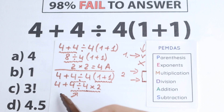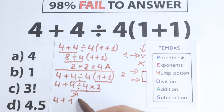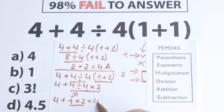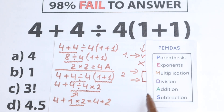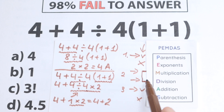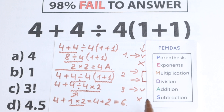Continuing left to right, we still have the multiplication: 1 times 2 equals 2, so we now have 4 plus 2. The last step is Addition — we have no subtraction here. So: 4 plus 2 equals 6.